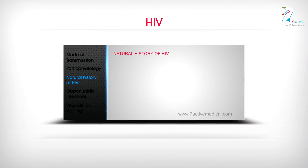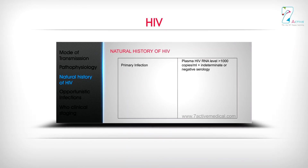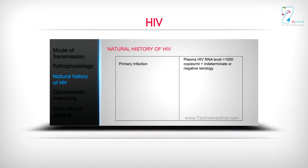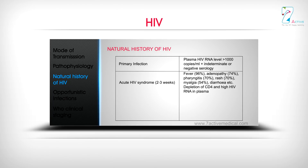Natural history of HIV — Primary infection: Plasma HIV RNA level is greater than 1,000 copies per ml, plus indeterminate or negative serology. Acute HIV syndrome occurs at 2–3 weeks with symptoms including: fever (96%), adenopathy (74%), pharyngitis (70%), rash (70%), myalgia (54%), and diarrhea. This is accompanied by depletion of CD4 cells and high HIV RNA in plasma.